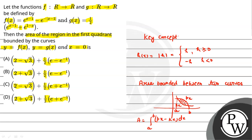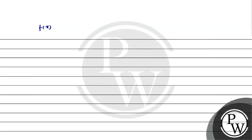Now in our question, two functions are given: f(x) and g(x). Let us note them. f(x) = e^(x-1) - e^(-|x-1|). Let us open this mod function. We equate x - 1 = 0, which gives x = 1.